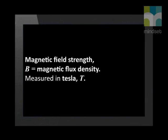The magnetic field strength is indicated with the symbol B. The strength of the magnetic field is also sometimes known as the magnetic flux density, B, and the unit for B is Tesla with the symbol T.